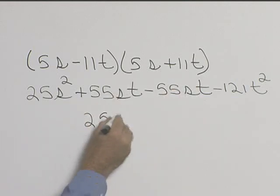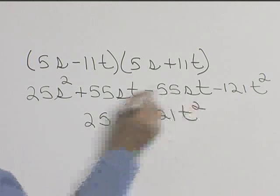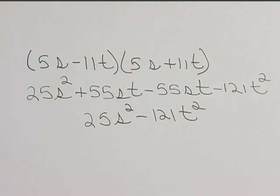So we're left with 25s squared minus 121t squared. So multiplying we get 25s squared minus 121t squared.